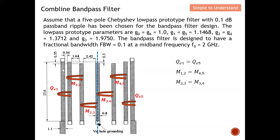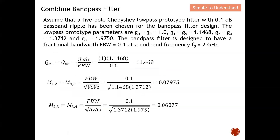We are going to have five poles — five resonators. The input and output elements are not resonators. We want the filter to be symmetric, so there is a center line: Qe1 = Qe5, M12 = M45, and M23 = M34. Due to symmetry, I don't need to calculate them twice. Now I'm ready to calculate the value for Qe1 using the formula with g0, g1, and FBW.